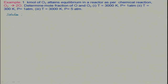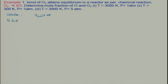The reaction is O₂ going to 2O, and at equilibrium that means 2O can combine and come back to O₂. We are basically interested to find xO₂ and xO — the mole fraction of O and O₂.